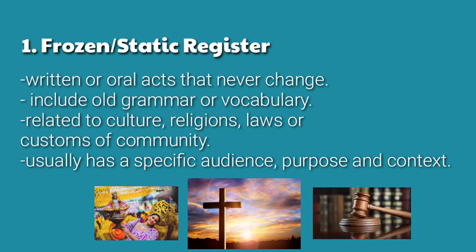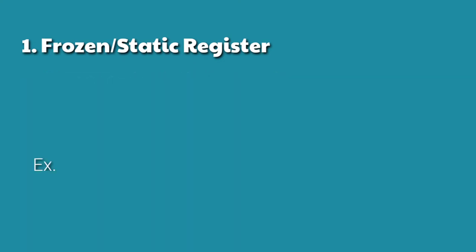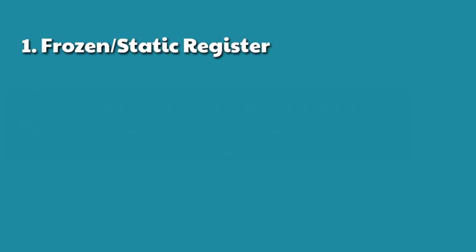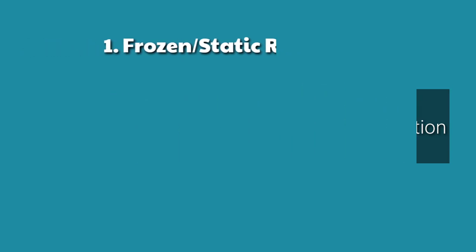Frozen register usually has a specific audience, purpose, and context. For example, our own national anthem, Lupang Hirang, plays only for our country. The Bible, which devoted followers read. This register is often learned by a person and passed down from generation to generation to preserve it.